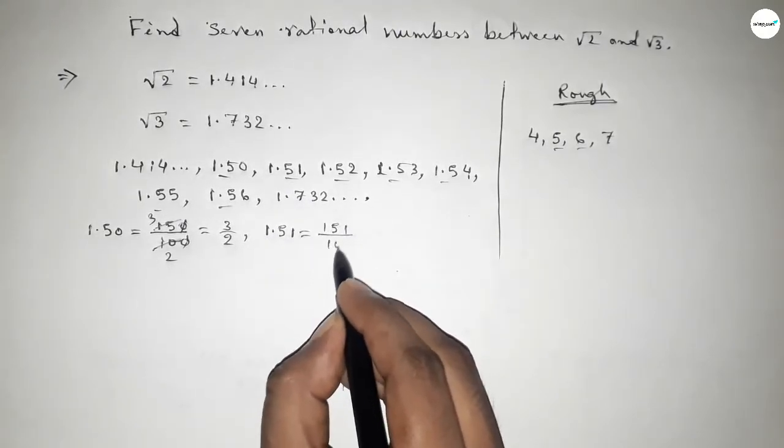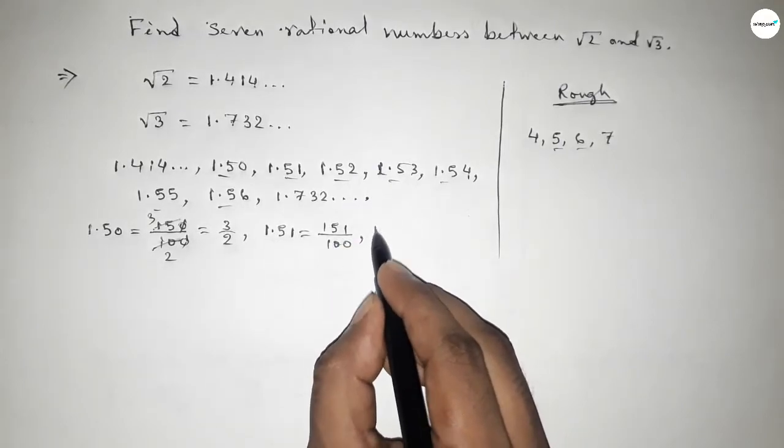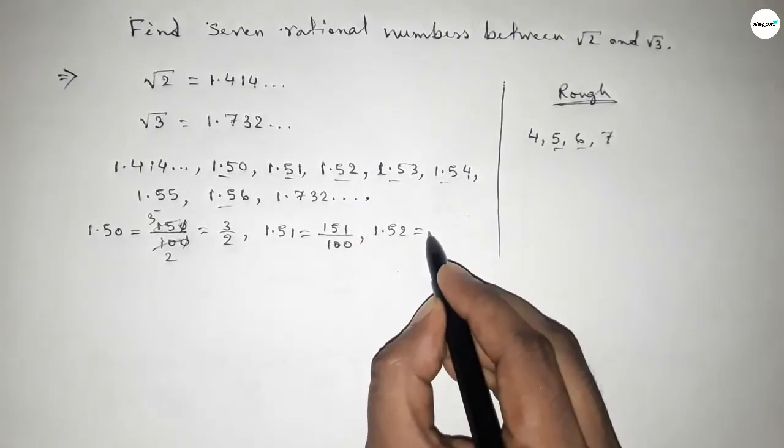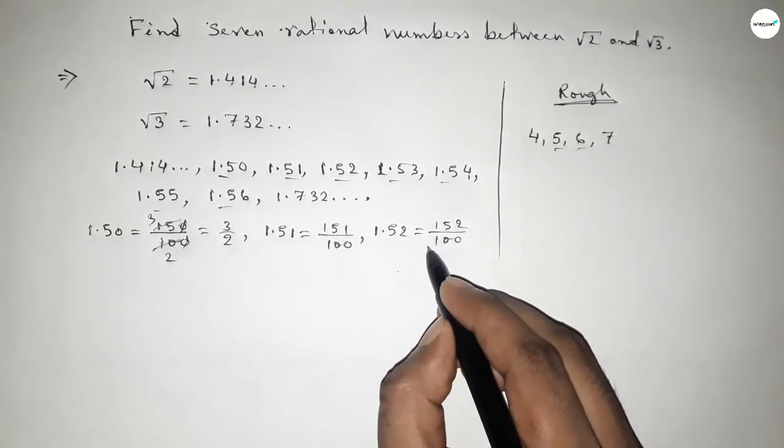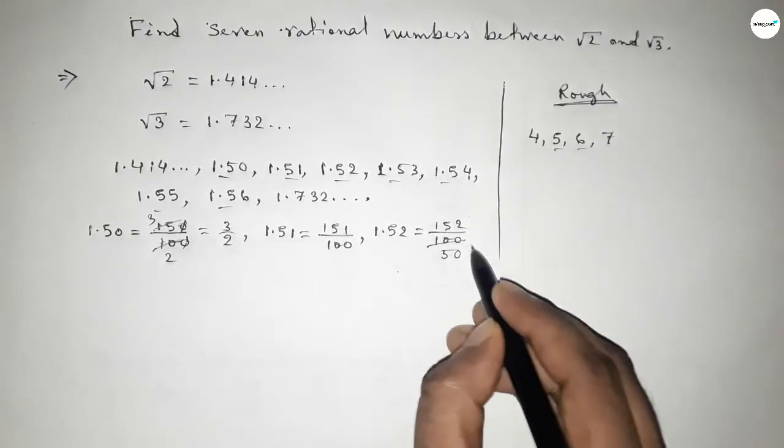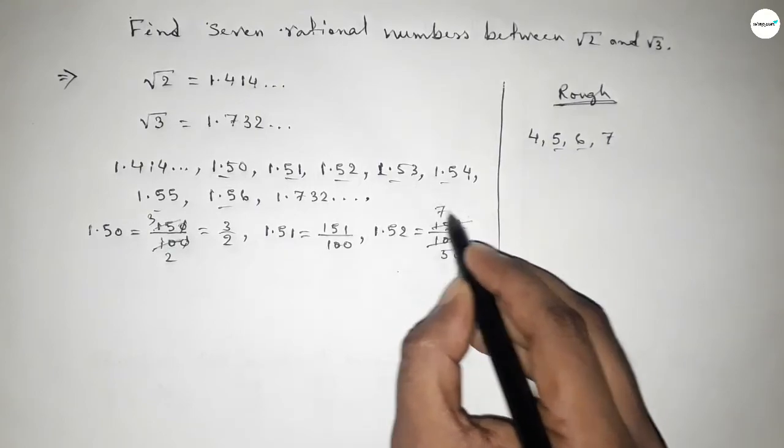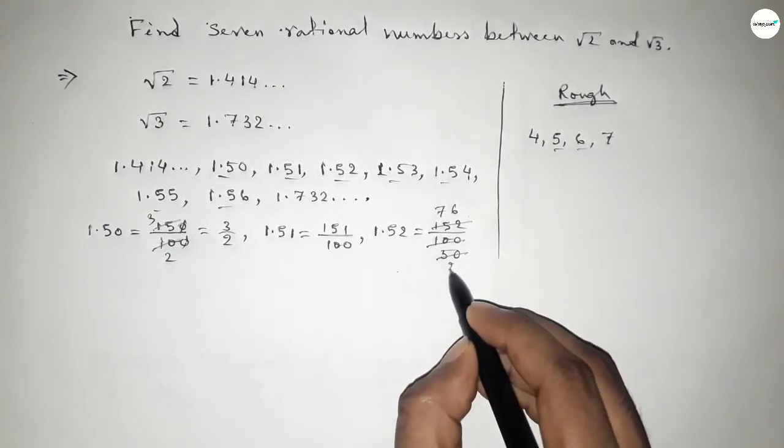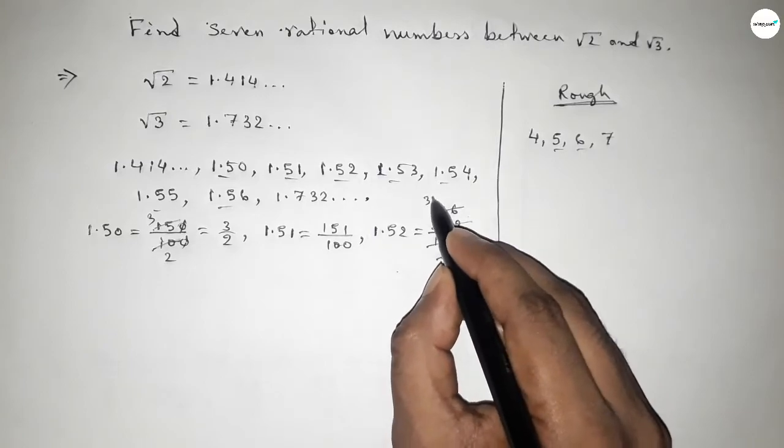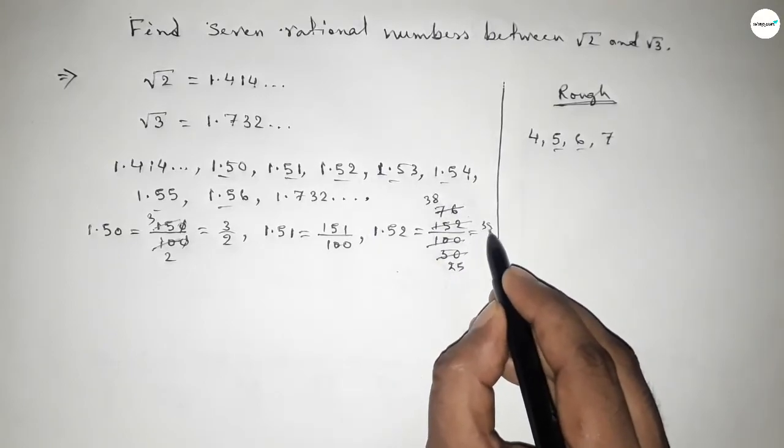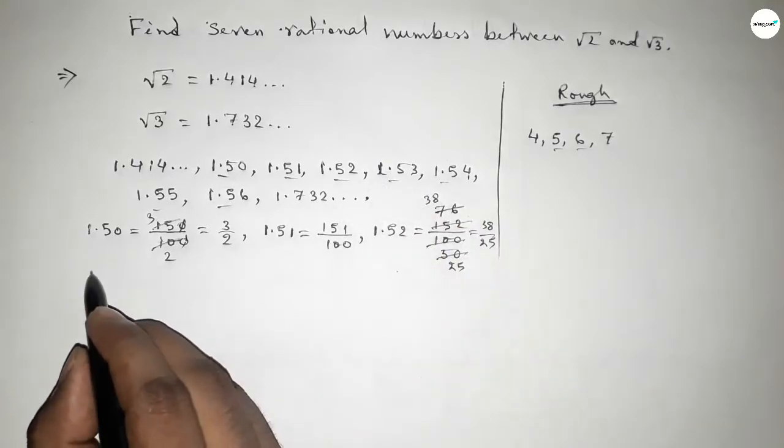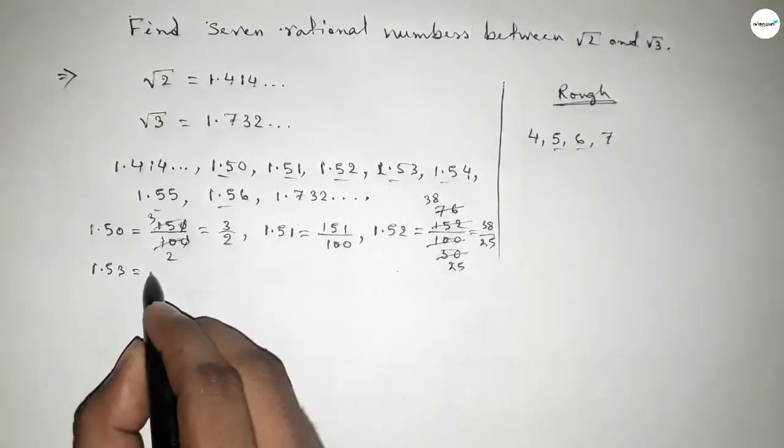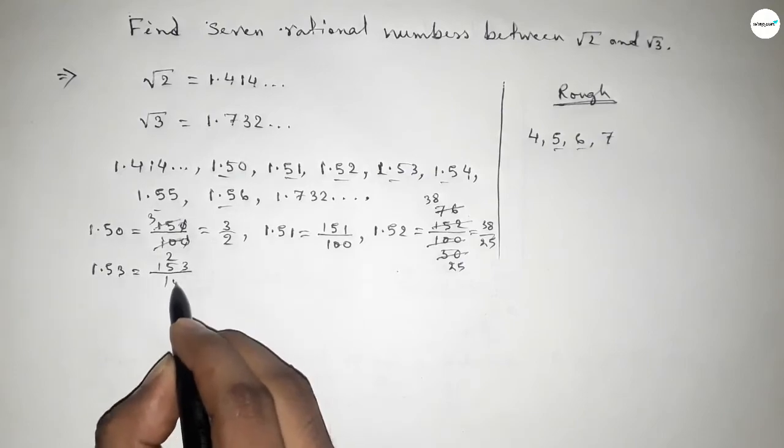Next, 1.52 equals 152 over 100. Now simplifying this, if you divide both numbers by 2, this is 50 and this is 77, so 77 over 50. We can write this as 38 over 25. Next, 1.53 equals 153 over 100.